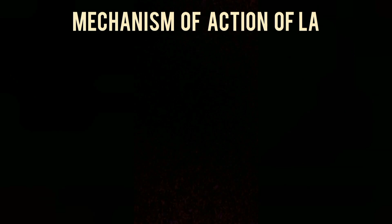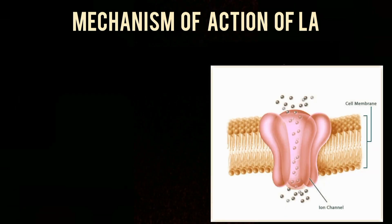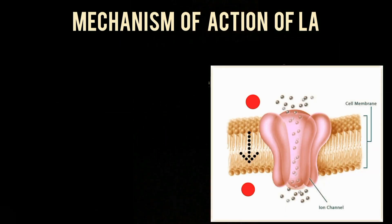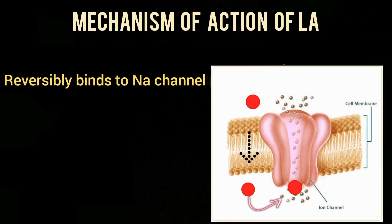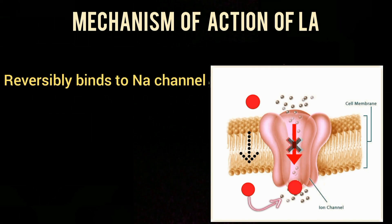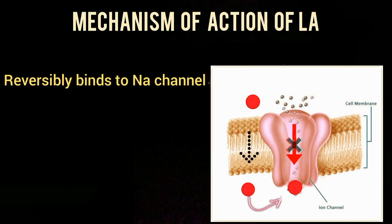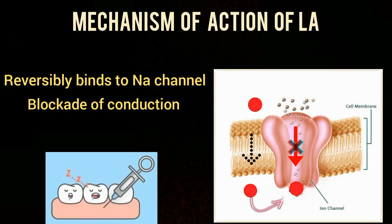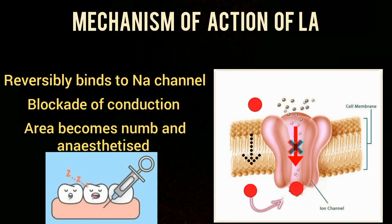Local anesthetic agents work by being lipophilic — they cross the cell membrane and enter the intracellular space. They then reversibly bind to the sodium channel, preventing the influx of sodium, resulting in blockade of conduction and ultimately causing the area to become numb and anesthetized.